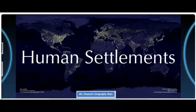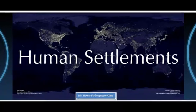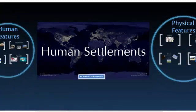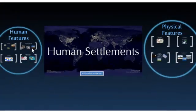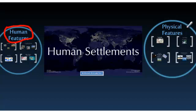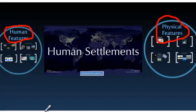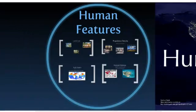This is going to be all about human settlements. People choose to live in certain areas because of the human features of an area and the physical features. The geography of an area and the human geography of an area are very influential in people's choice of where they want to live.